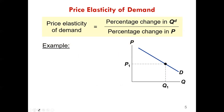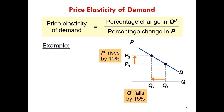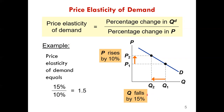Let's look at an example. At price P1, quantity demanded is shown here. When price rises from P1 to P2 by 10 percent, we observe that quantity demanded falls by 15 percent from Q1 to Q2. To find the price elasticity of demand, we divide the change in quantity demanded of 15 percent by the change in price of 10 percent. 15 divided by 10 gives us 1.5 as our price elasticity.